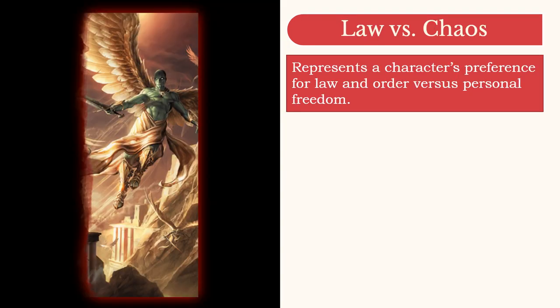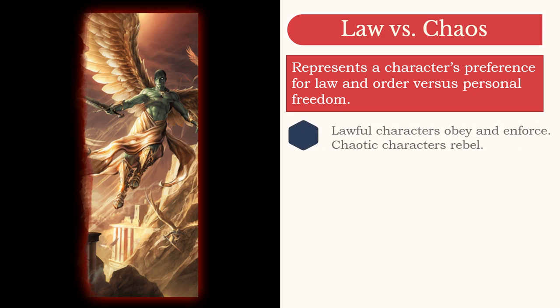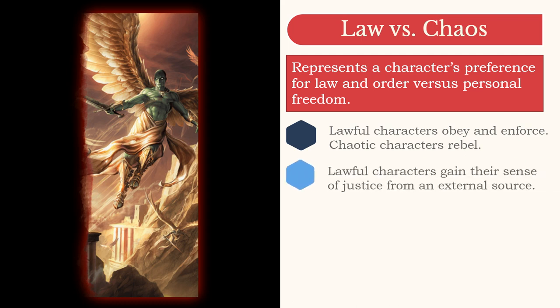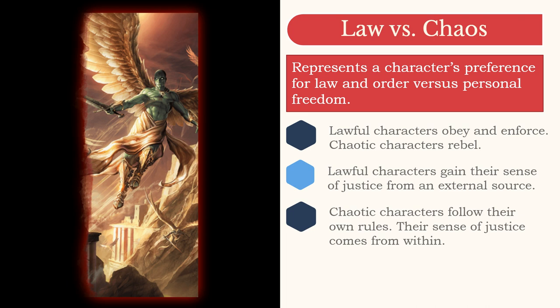The other axis notes a character's preference for law versus chaos. Many players, both new and experienced, mistake law for meaning good and chaos for meaning bad. Neither of these terms are inherently good or bad. Law versus chaos represents a character's preference for structure and order in their lives. Are you more likely to obey or to rebel? Where does your character get their sense of right and wrong — is it from an external source, such as a city's laws or the tenets of your religion? Or does your sense of right and wrong come from an internal source — you do what you feel is just because that's how you feel.